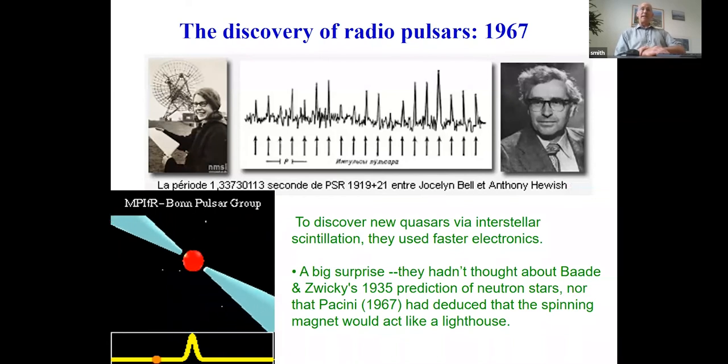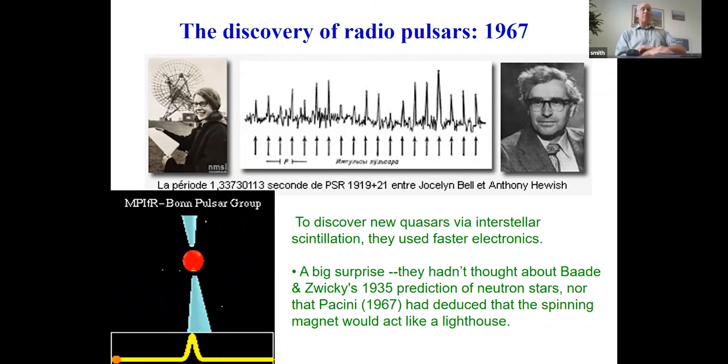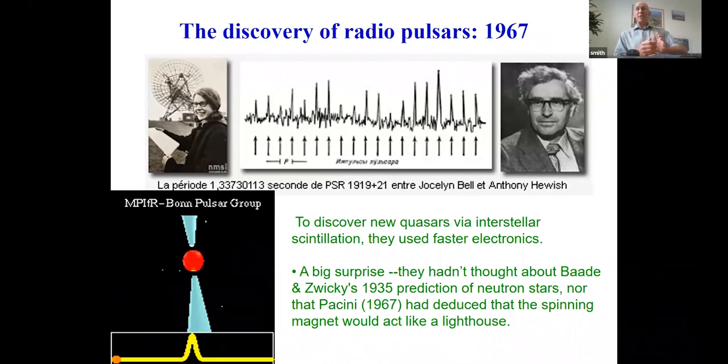So neutron stars have been predicted in the 1930s and then mostly forgotten. Like coincidence, there was this valiant fellow in the 60s who did some theoretical calculations of a rotating magnet making a dynamo, making beams of stuff. And at the same time, there were radio astronomers who were looking for transient radio signals. They were looking for interstellar scintillation in order to discover quasars. And this is really important because when you have noisy electronics, what you do is you integrate in time.